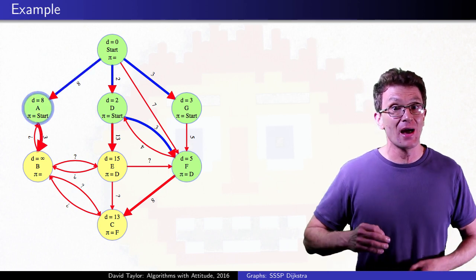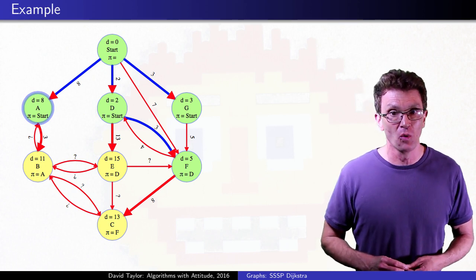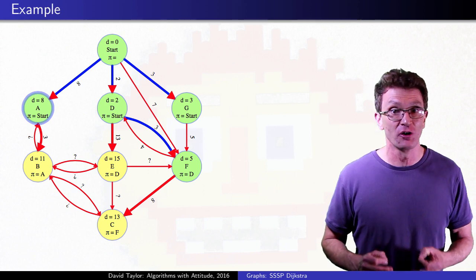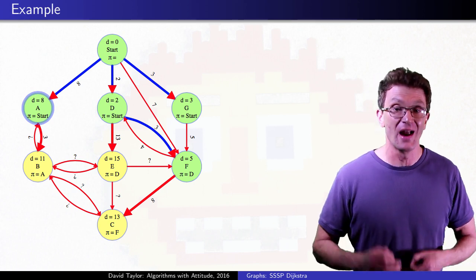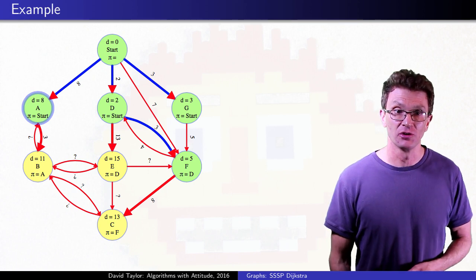After F comes A, and after we relax A's outgoing edges, if we freeze it right there, we have the snapshot that we walked through before. We have finalized distances to the 5 vertices closest to the start, where A is the farthest at distance 8, and B is the next closest.